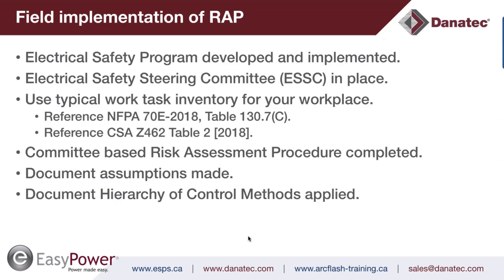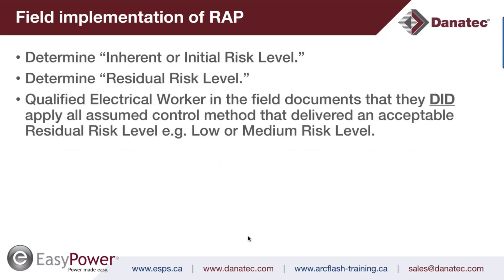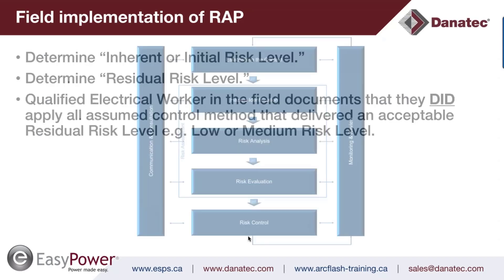Committee-based risk assessments would include a management sponsor, an electrical engineer if available, an electrical maintenance supervisor, and representatives of the electrical workers. The committee performs risk assessments for typical work tasks and delivers risk levels to the working community. Workers then confirm application and document their application of the hierarchy of control methods assumed by the committee. The process starts with an inherent or initial risk level, applies all hierarchy of controls simultaneously, and achieves a residual risk level. The qualified electrical worker shall document their application of the assumed control methods.